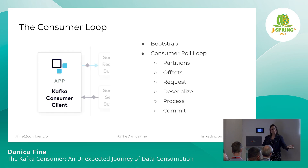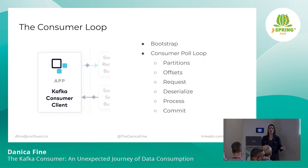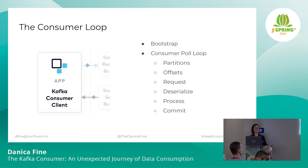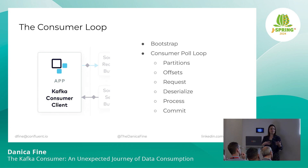From here we wash, rinse, and repeat — we're going to continue polling, fetching max.poll.records, processing those, committing those. When we exhaust the cache of fetched records, we will then issue another fetch request for more records from those topic partitions. As long as our consumer continues to issue heartbeats to the consumer group coordinator and we are polling within the max.poll.interval, we can operate this way indefinitely. And even if a consumer client does fail — which it probably will at some point — we can rest assured that whatever partitions it had are going to be reassigned to some other running consumer.